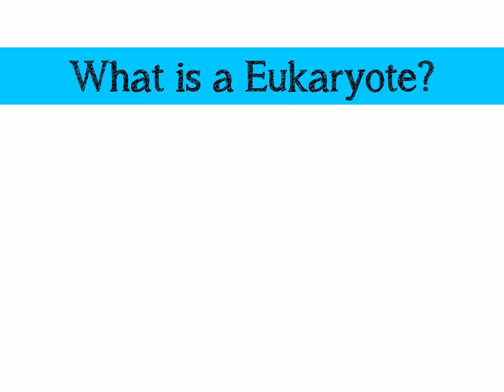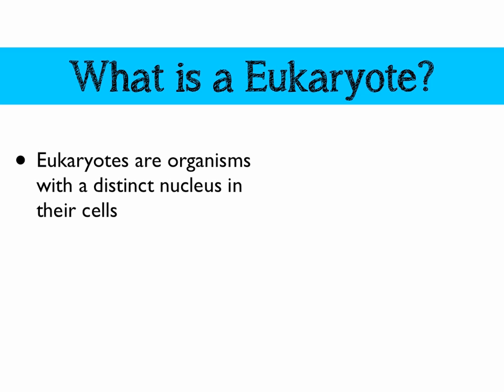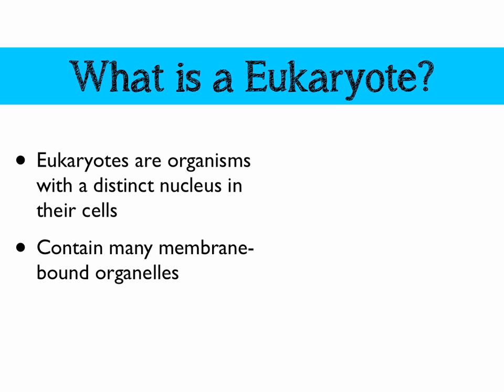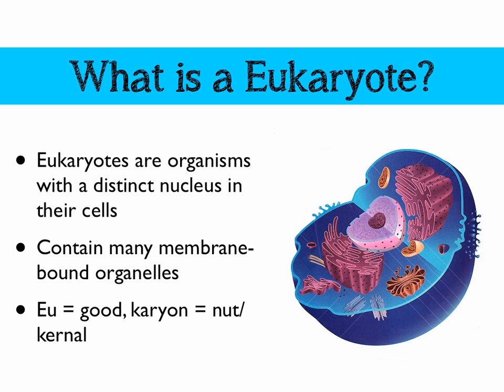What is a eukaryote, or a eukaryotic cell? It's something that has a distinct nucleus within their cells. Eukaryotes typically have many different membrane-bound organelles to keep those reactions separate and to make sure that compartmentalisation occurs. The word comes from the Greek: 'eu' means good, and 'karyon' means a nut or kernel — so 'good nut' or 'good kernel'. Think of a nut with a nice shell around the outside and stuff within it, representing the nucleus. And there is a typical eukaryotic cell.